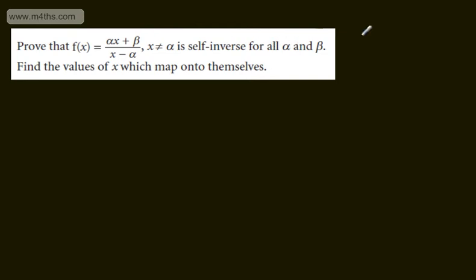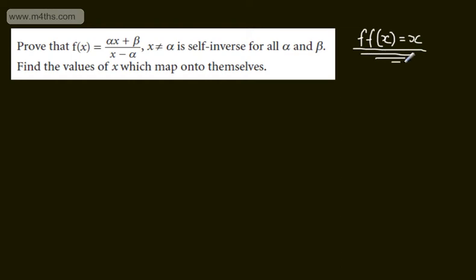If this is self-inverse, we can say that f of f of x will be equal to x. This is the property of a self-inverting function. So what we can do is set up a composite function, f of f of x.